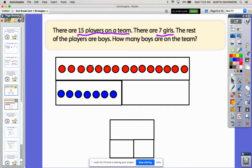1, 2, 3, 4, 5, 6, 7, 8, 9, 10, 11, 12, 13, 14, 15. This is my whole team. My whole team has 15 people on it. If you can picture the first seven being girls, I have a one-to-one correspondence here. There's one girl, two girls, three girls, four girls, five girls, six girls, seven girls. They line up with the pictures from the whole team.